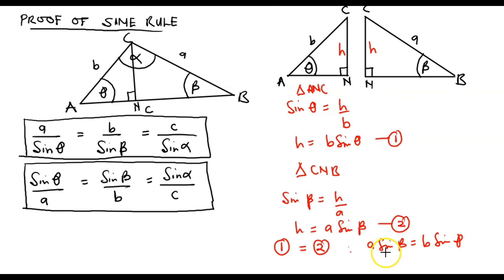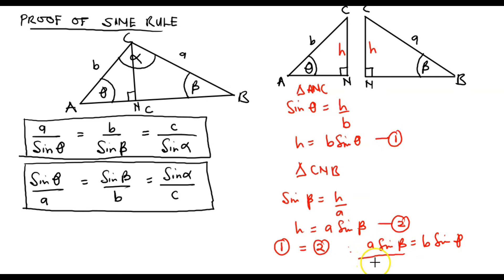Dividing through by sine of theta and sine of beta, we get: sine of beta over sine of beta times sine of theta on one side and on the other side sine of theta over sine of beta times sine of theta.